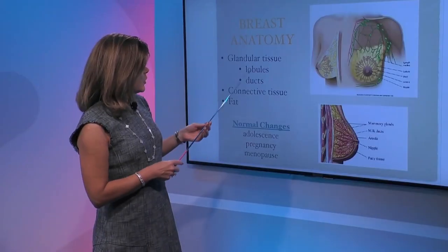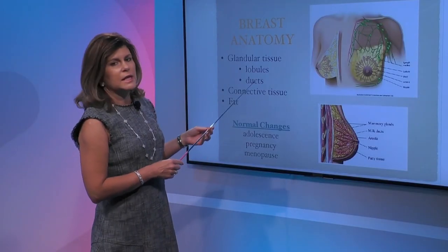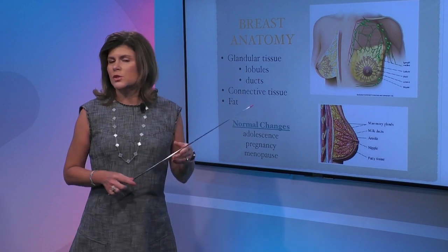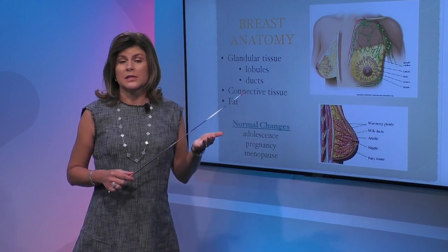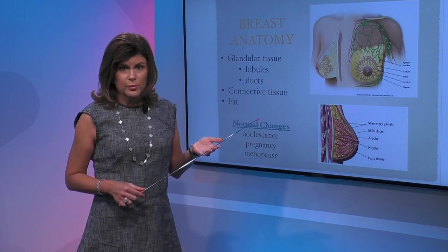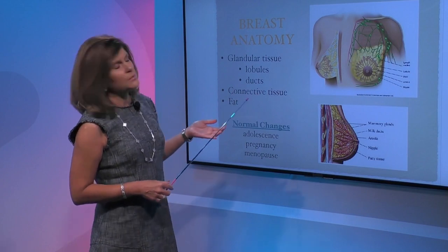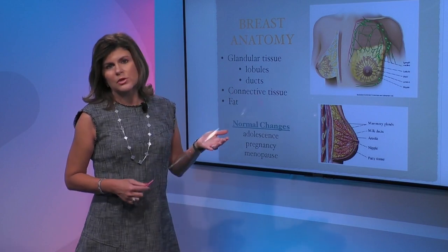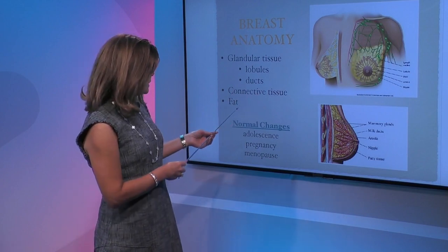The other tissue found in the breast is connective tissue, which is responsible for giving the breast its shape and providing support. It contains some suspensory ligaments, also known as Cooper's ligaments.